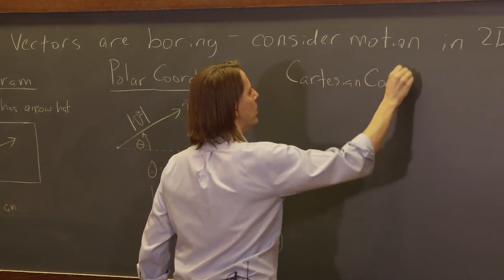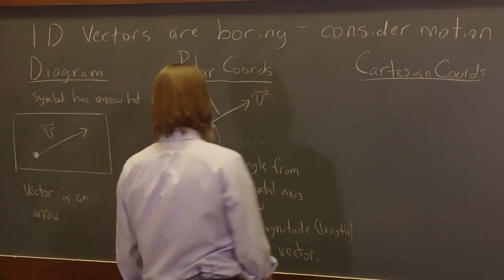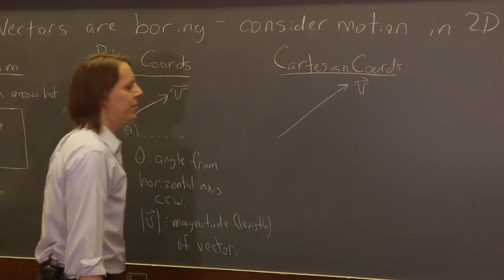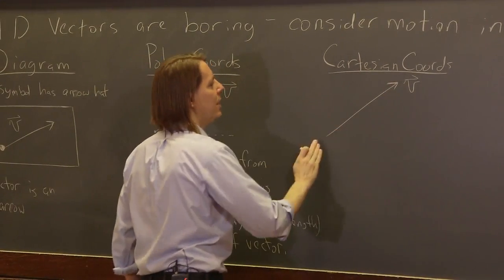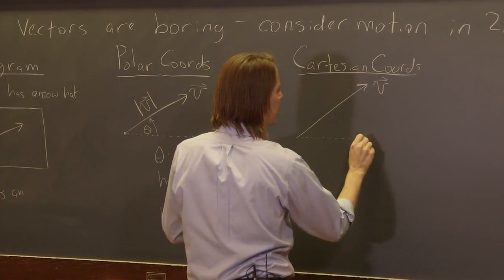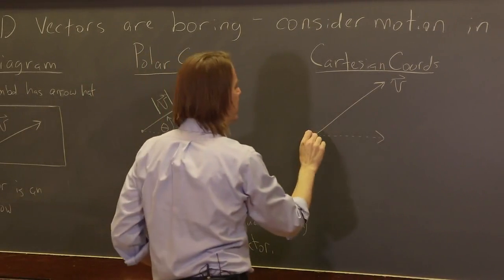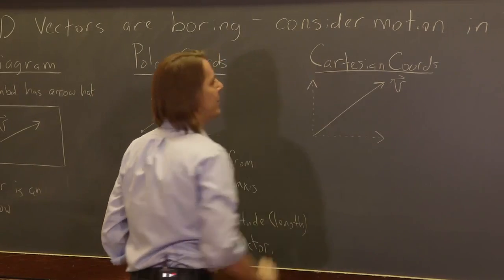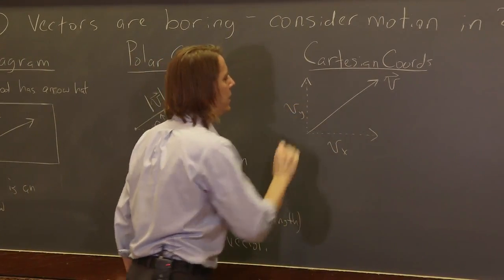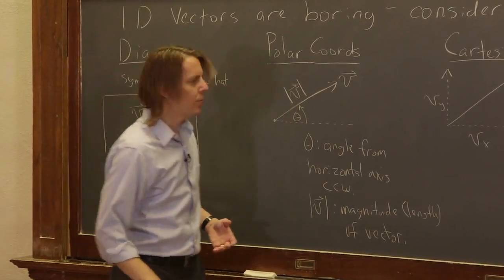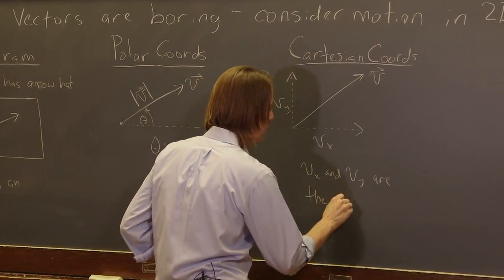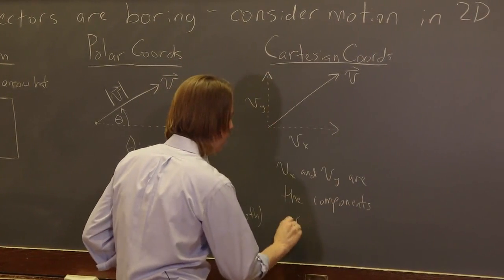You can also look at them in Cartesian coordinates. We take that same vector and we can draw it like that. There's the vector. We can imagine there's an x-axis this way, horizontal like there usually is, and a y-axis this way. Then we can break this down and say how much of this vector is along the x-axis. We can draw something like that—that would be how much is along x. And we can draw something like that—that would be how much of it is along y. So then we label those Vx and Vy. Again, it's two scalar numbers. Vx and Vy are the components of the vector.